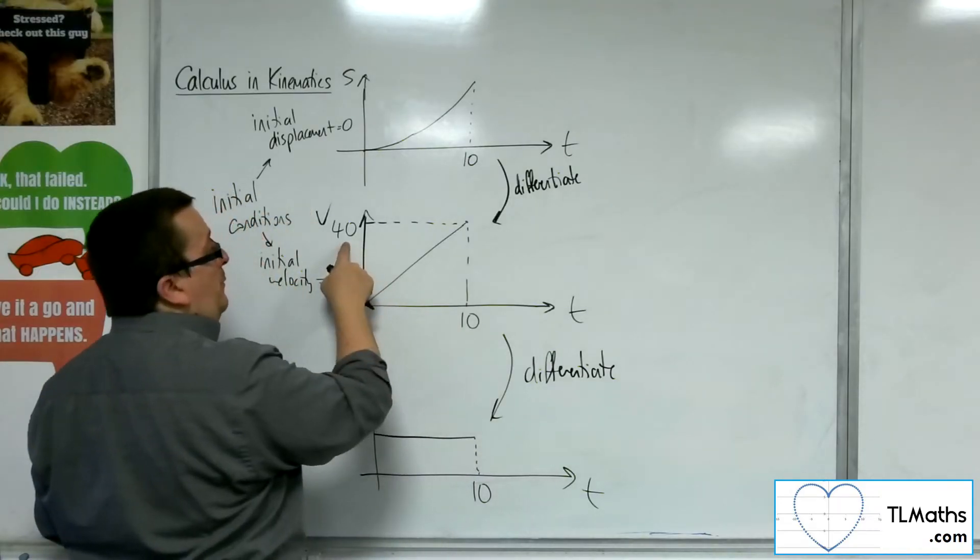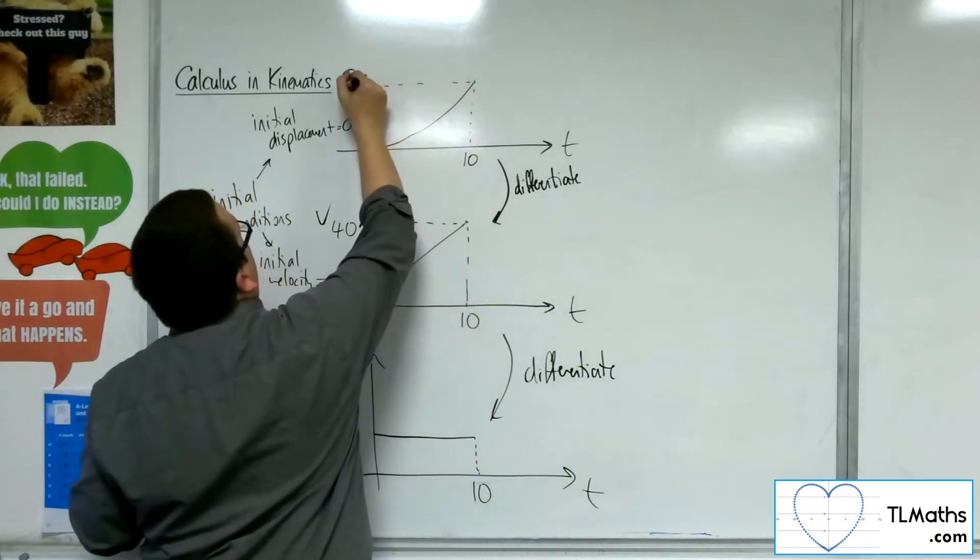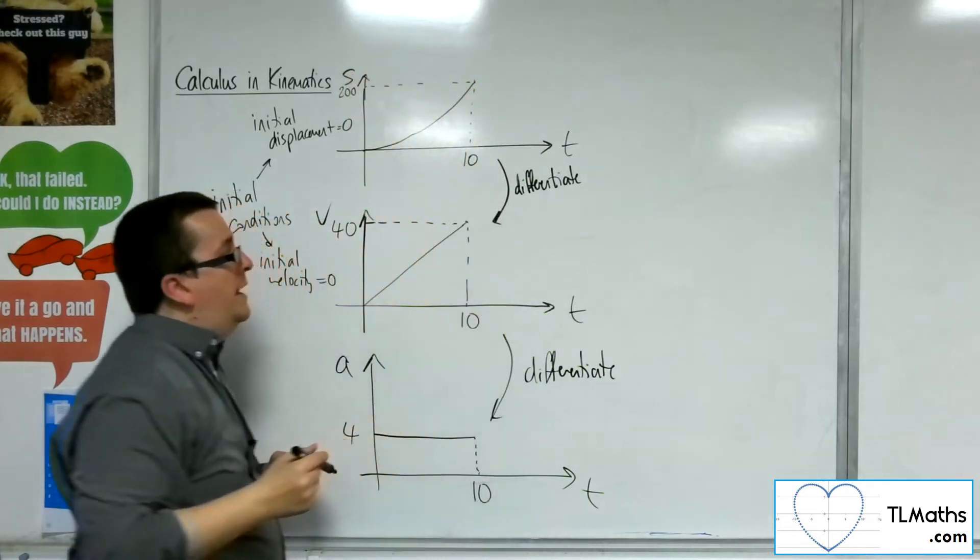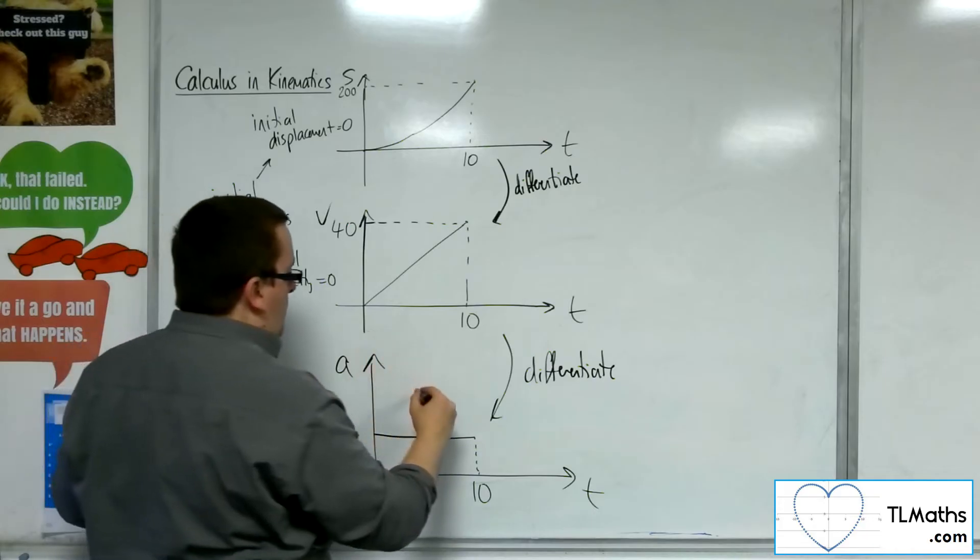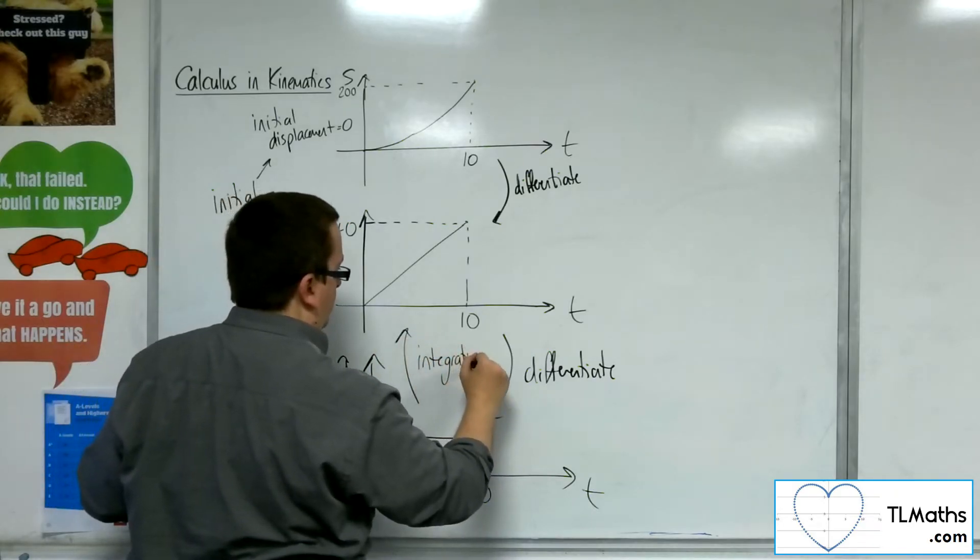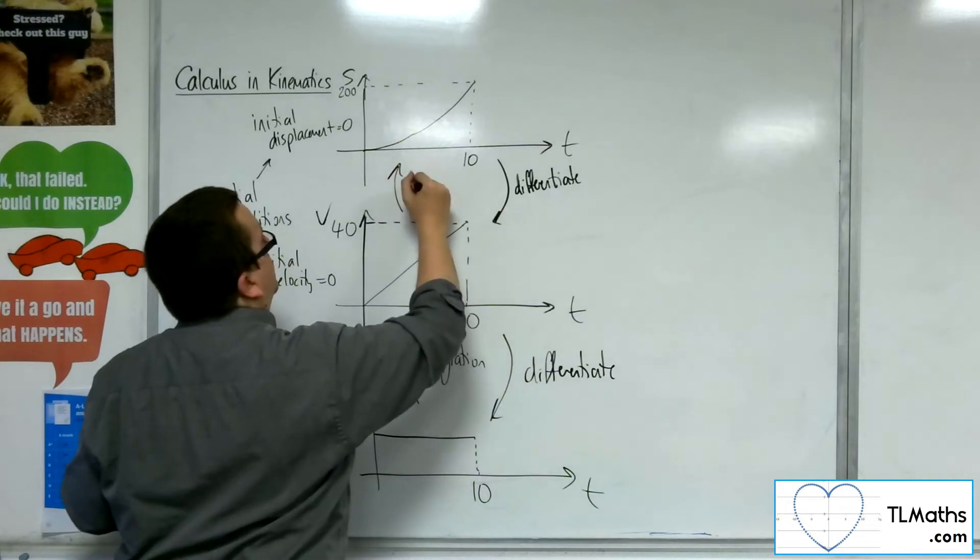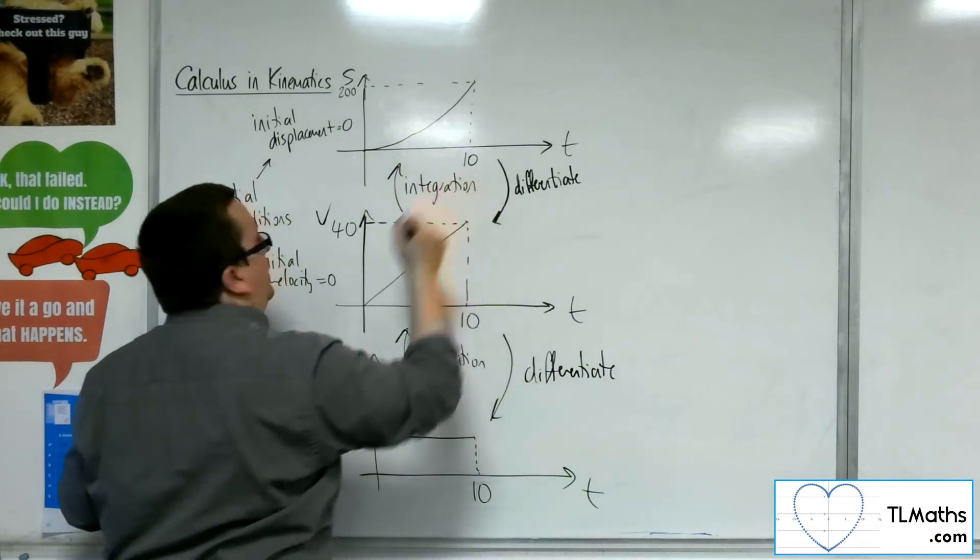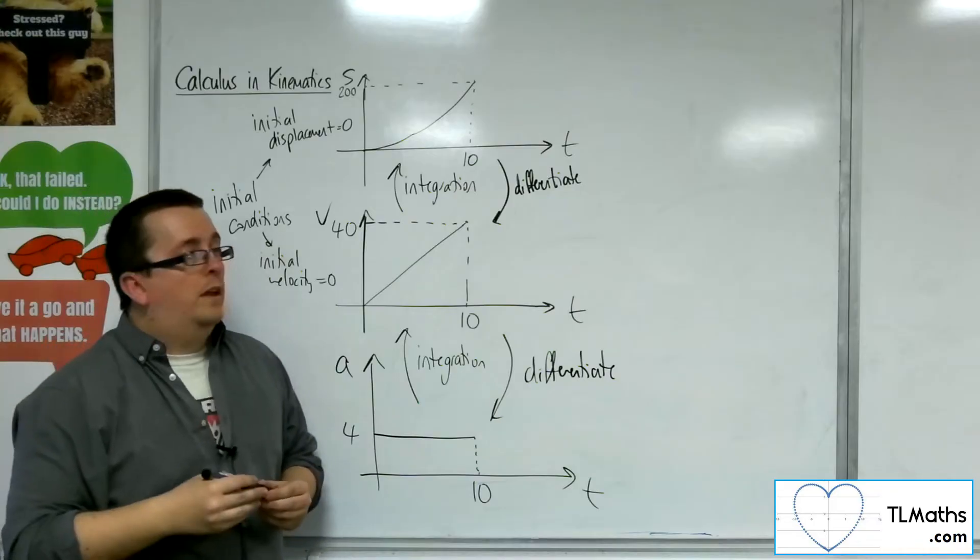The area of this triangle will tell me the overall displacement that I've travelled. So half base times height is half of 10, so 5 times by 40, and so that would be 200 metres. And so, to go back, I can integrate as the reverse process of differentiation.